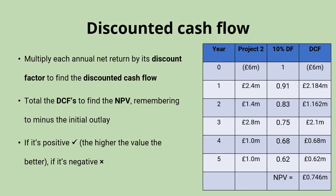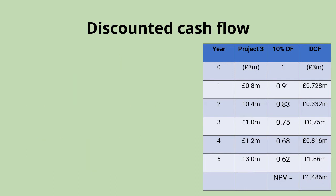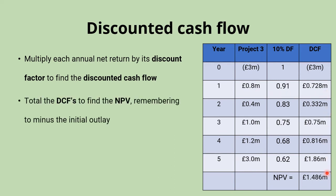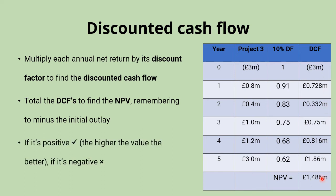Same steps for project three — we multiply the net return by the discount factor to get our discounted cash flow, add those up minusing the three million pound initial investment, and that gives us a net present value of 1.486 million pounds. That's positive, which is good, and it's the highest of the three investment projects. So based on our discounted cash flow method of investment appraisal, project three is the best project to go ahead with.